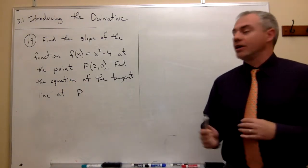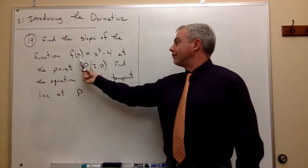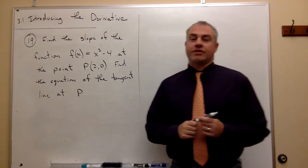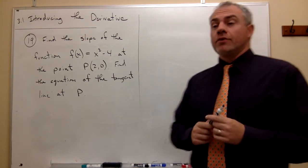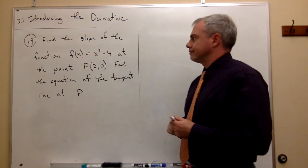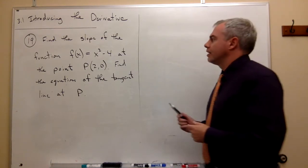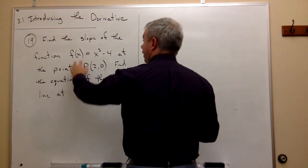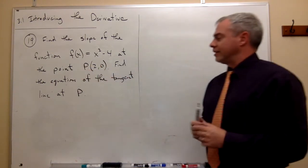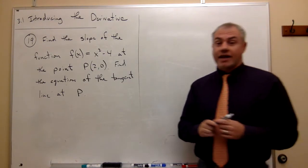So there are two parts of this problem. The first part, we want to find the slope of this function at this point, and then find the equation of the tangent line. Now, there are really two ways to go about this — we can either find the derivative function, or we can just find the derivative at the point. For this problem, let's find the derivative specifically at the point.